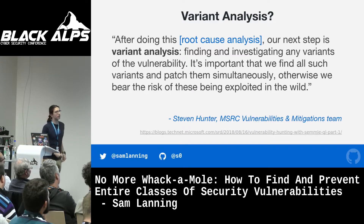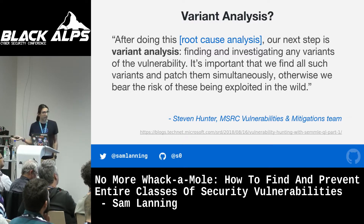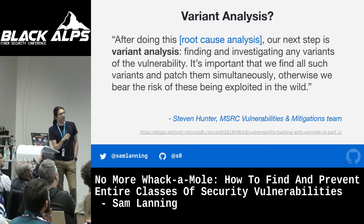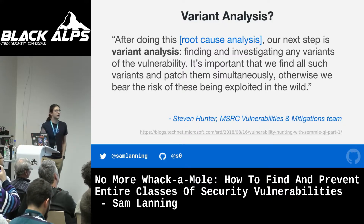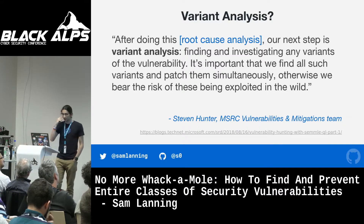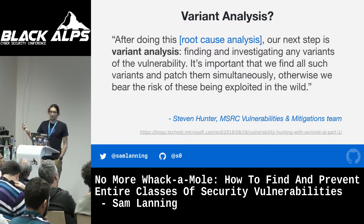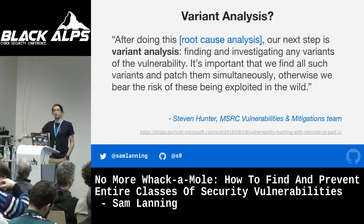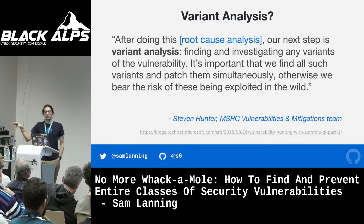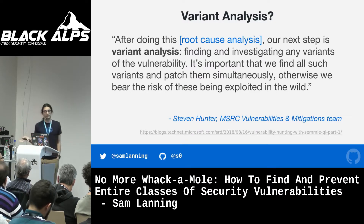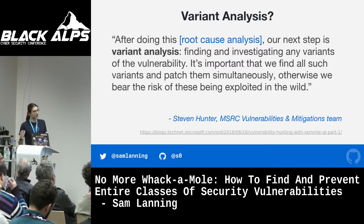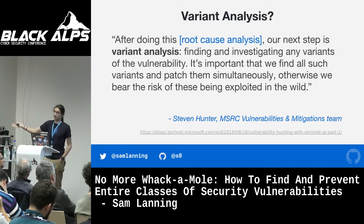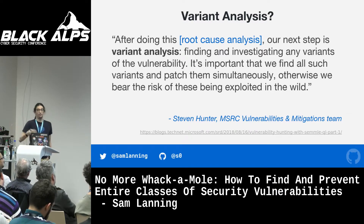Here's a quote from a blog post by Stephen Hunter from the Microsoft Security Response Center: 'After doing root cause analysis, our next step is variant analysis — finding and investigating any variants of the vulnerability. It's important that we find all such variants and patch them simultaneously. Otherwise, we bear the risk of these being exploited in the wild.' For them, it's simply not an option not to do it. It's a stage of their vulnerability response process that happens before making details public, so they can patch the original vulnerability and all variants at the same time. Because once a patch is released, other people will try to find similar vulnerabilities and exploit them.